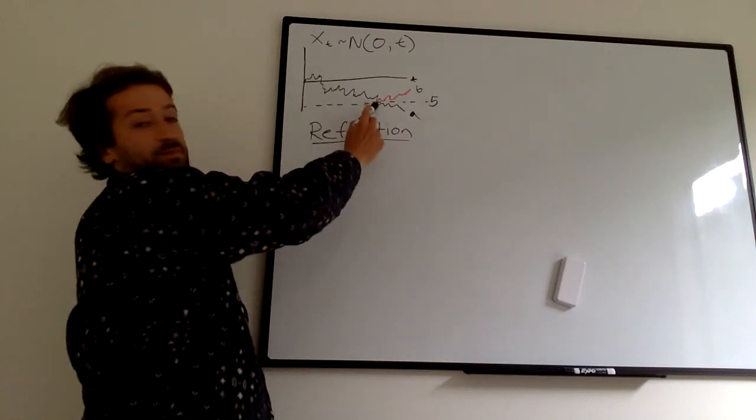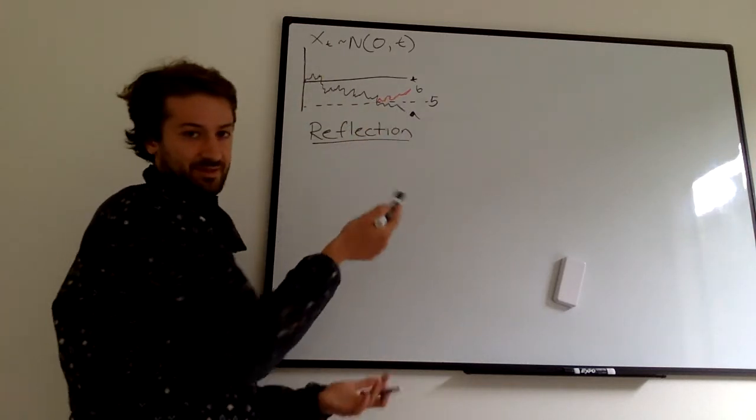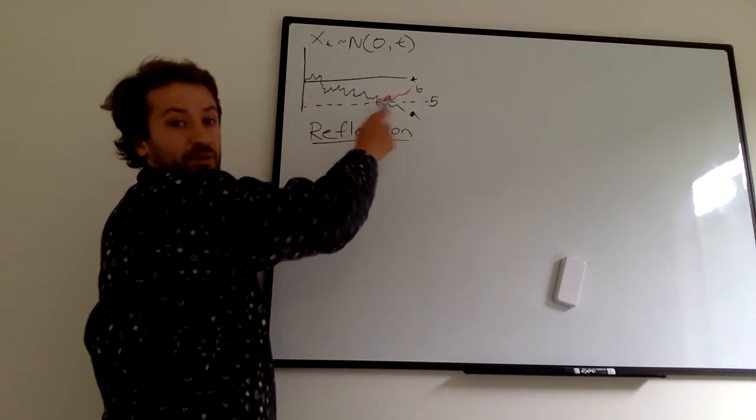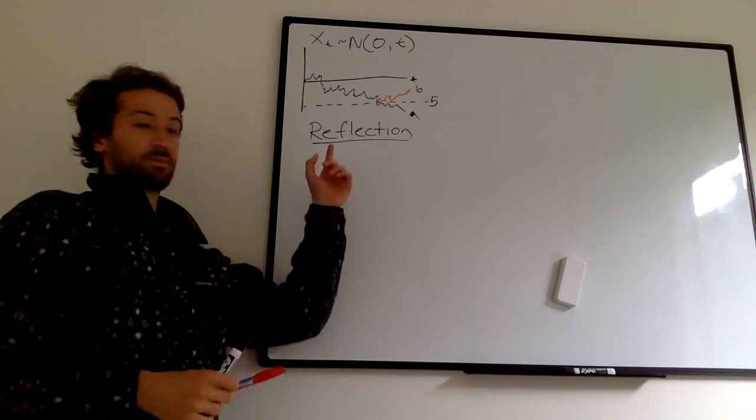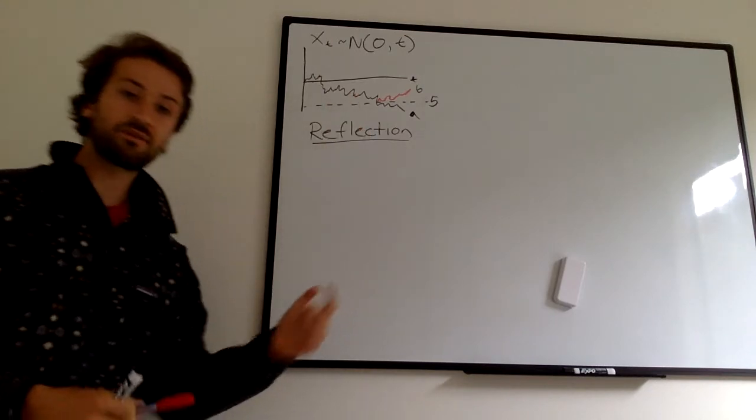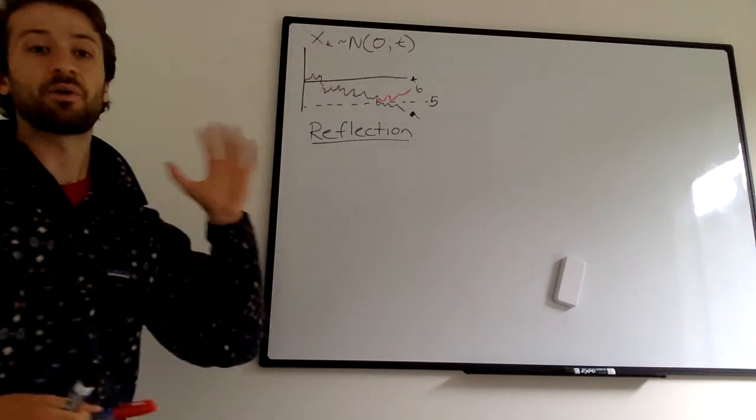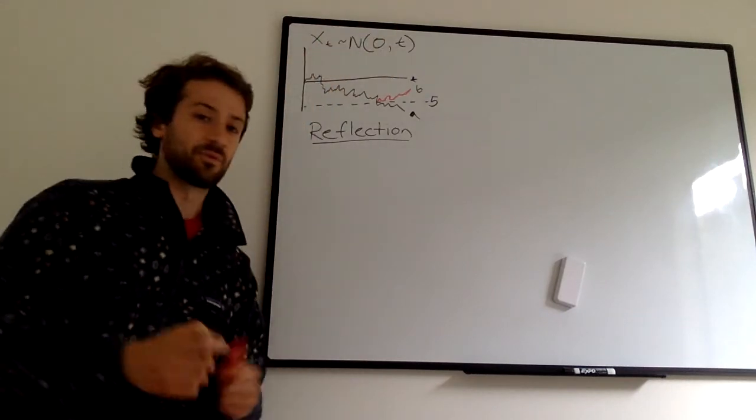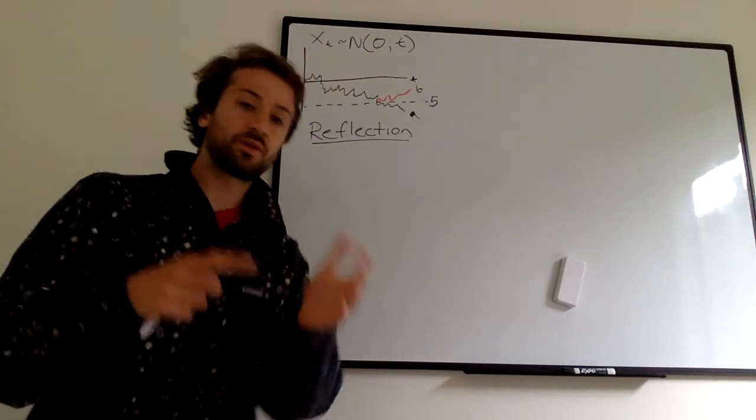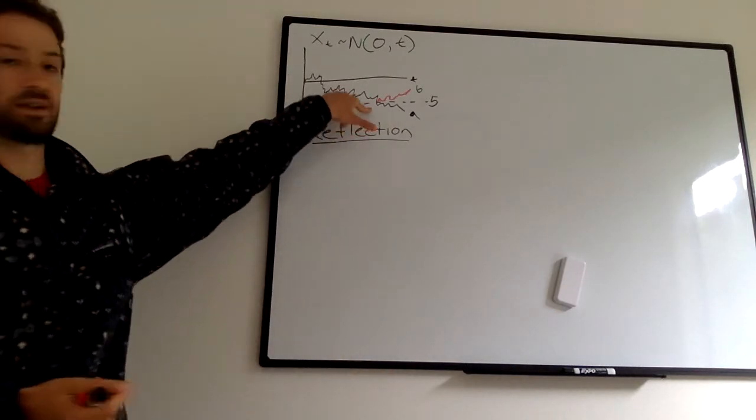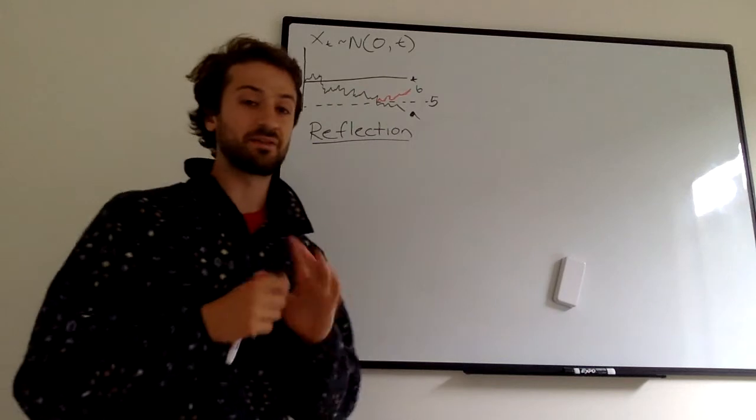After this point where they're reflected, one is above negative five and one is below negative five. But because the Brownian motion has a mean of zero at every point, it's equally likely to be negative one or one or negative 0.5 or 0.5. It's symmetric about zero. So the changes about this line are symmetric, they have equal probability, even though one is above and one is below.